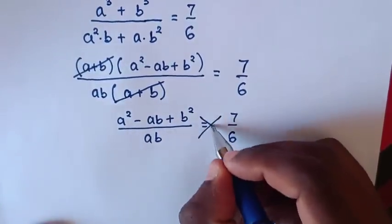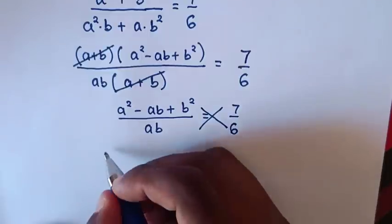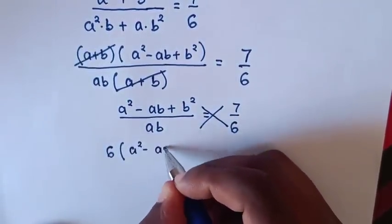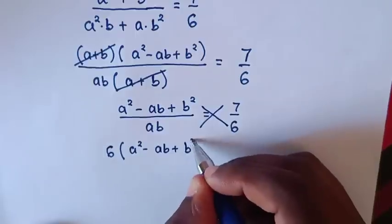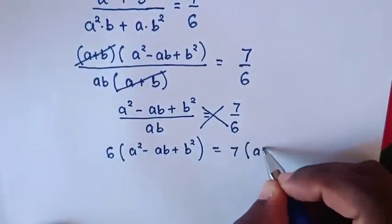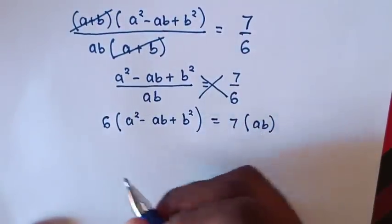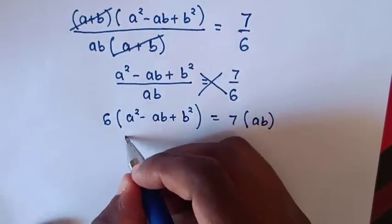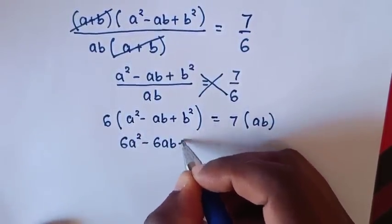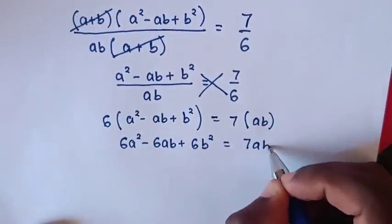We cross multiply to get: 6(a^2 − ab + b^2) = 7ab. Then we expand the left side: 6a^2 − 6ab + 6b^2 = 7ab.